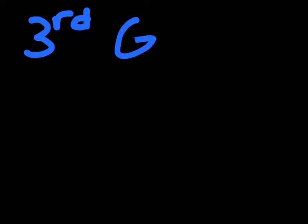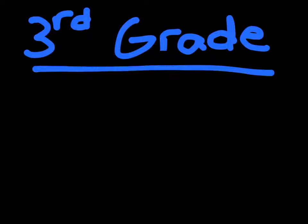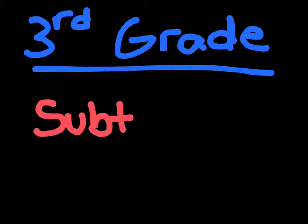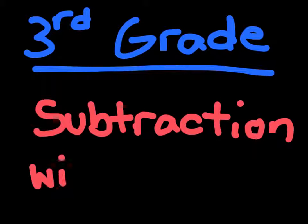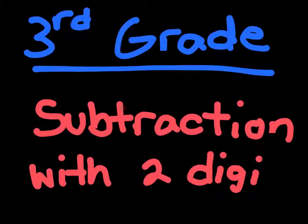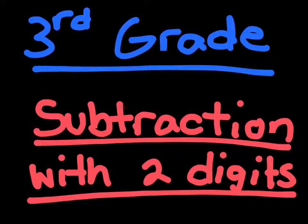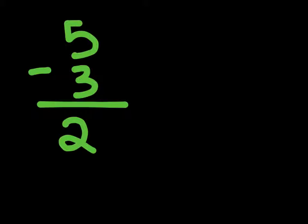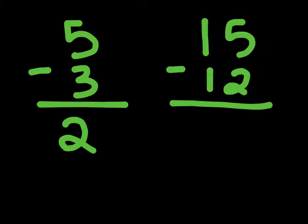Alright, so today we're going to do 3rd grade math and our topic is going to be subtraction with 2 digits. This is a fairly simple topic — instead of 1-digit questions like 5-2, we're going to do 2-digit questions like 15-12. Let's get started.